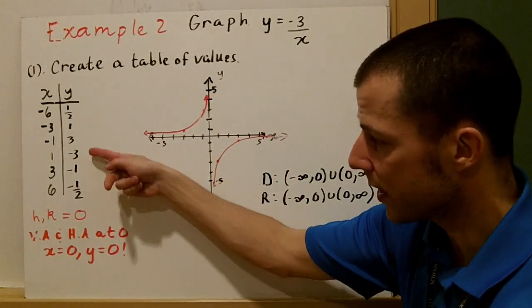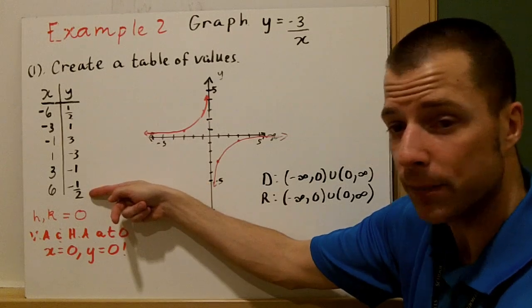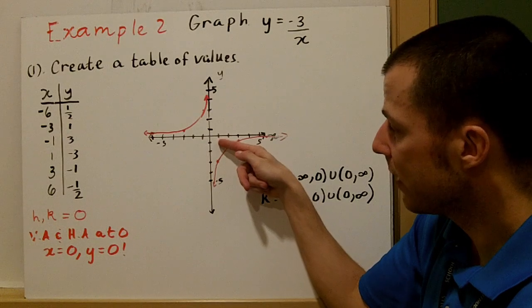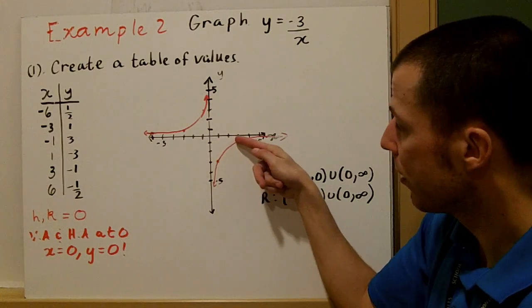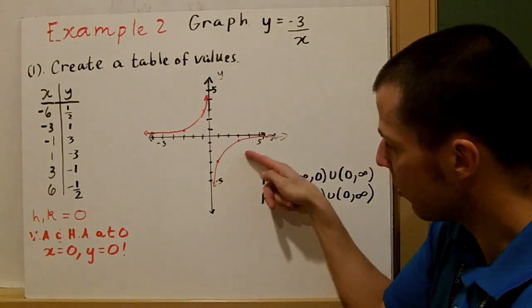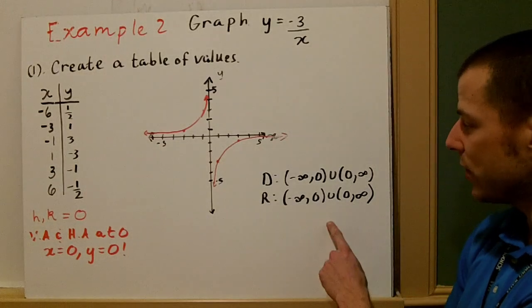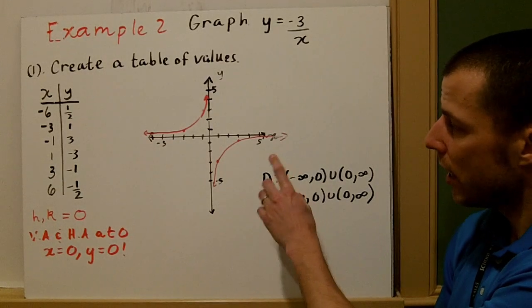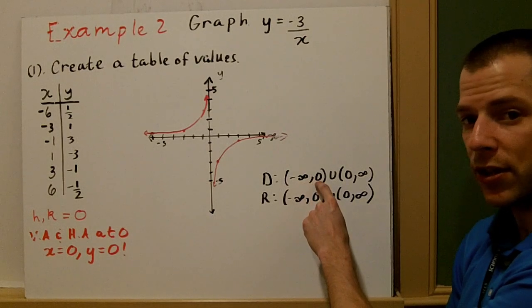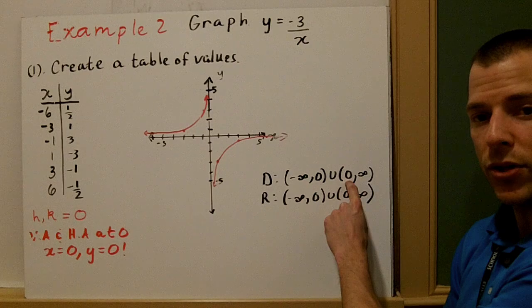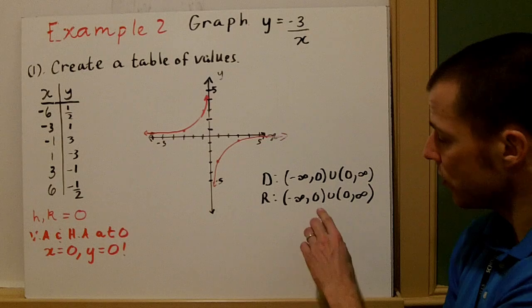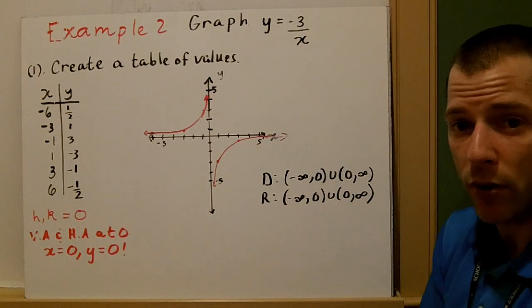For x values of 1, 3, and 6, I get negative values. Plugging in 1 gives negative 3; plugging in 3 gives negative 1; and 6 gives negative one-half. I follow my asymptotes for that branch as well. The domain has the same restriction — x can't be 0 — so it's negative infinity to 0 union with 0 to infinity. The range is also the same: negative infinity to 0 union with 0 to infinity.